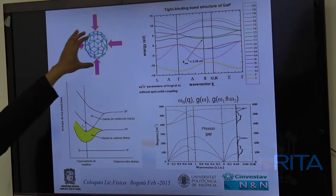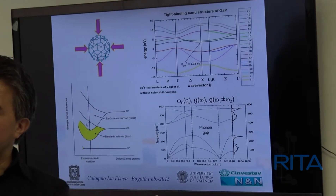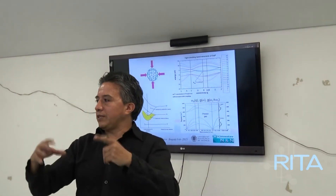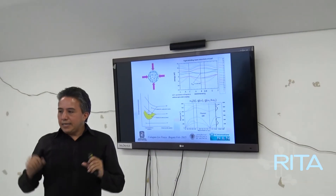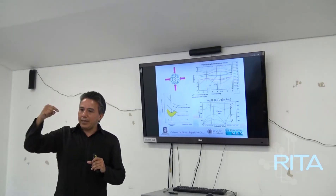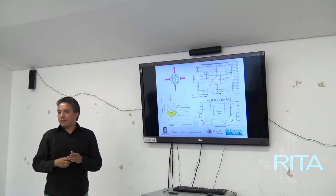¿Cuál es el objeto de esto? Yo tengo un material y en cualquier dirección le someto una presión. La única forma de obtener esa presión igual en cualquier dirección es que la presión sea hidrostática: cuando coloco un objeto dentro de un fluido, la presión en todas las direcciones es la misma. Eso garantiza condiciones de hidrostaticidad — en cualquier dirección del material, independiente de su forma, los esfuerzos que yo estoy haciendo sobre el material son los mismos en cualquier dirección.